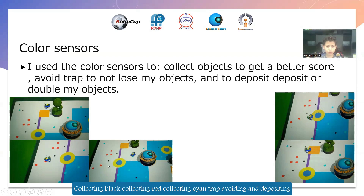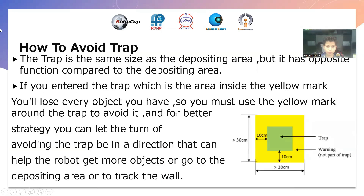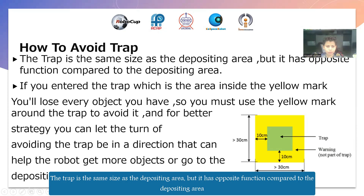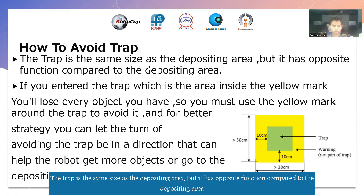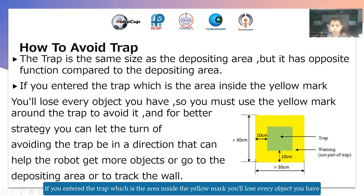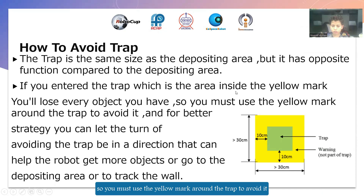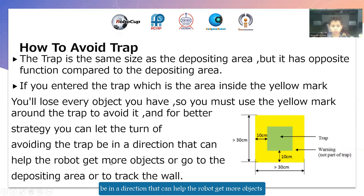That includes: collecting black, collecting red, collecting cyan, trap avoiding, and depositing. Now, to avoid the trap — the trap is the same size as the posting area, but it has the opposite function compared to the posting area. If you enter the trap, which is the area inside the yellow mark, you will lose every object you have. So you must use the yellow mark around the trap to avoid it.